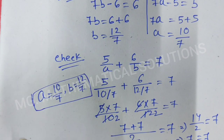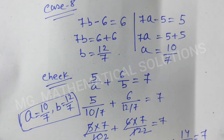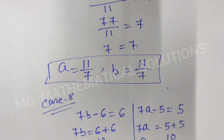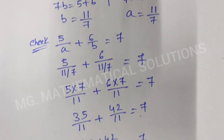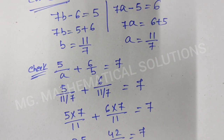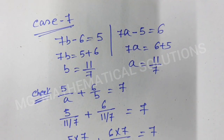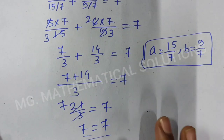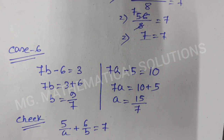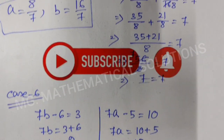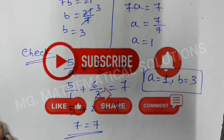So here we get 8 values of A and B. This is a lengthy solution. I hope the question has conditions. Thank you for watching. If you like this video, please subscribe to my channel and click the bell icon for more videos. Please comment.